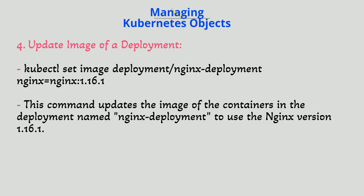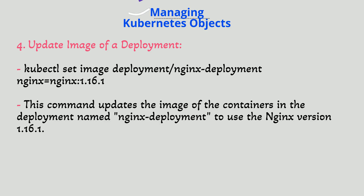4. Update image of a deployment. `kubectl set image deployment/nginx-deployment nginx=nginx:1.16.1`. This command updates the image of the containers in the deployment named nginx-deployment to use nginx version 1.16.1.